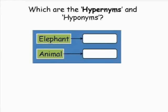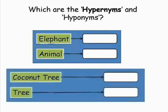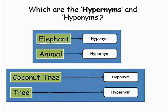Which are the hypernyms and hyponyms? Elephant is the hyponym of animal, and animal is the hypernym of elephant. Coconut tree is the hyponym of tree, and tree is the hypernym of coconut tree.